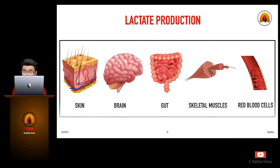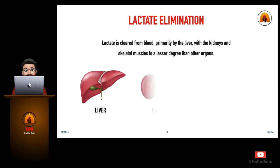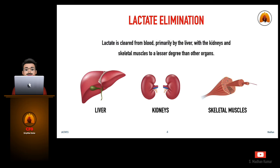Lactate is produced primarily in skeletal muscle, gut, brain, skin, and red blood cells. During anaerobic conditions, most lactate is produced in skeletal muscle and the gut. Lactate is a by-product of anaerobic respiration and is normally cleared from the blood by the liver, kidneys, and skeletal muscle.